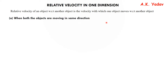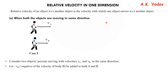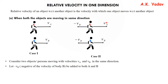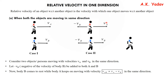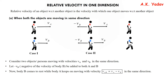Let's take the first case when both objects are moving in the same direction. We have two objects A and B moving with velocities VA and VB in the same direction. We add the negative of the velocity of B — that is, minus VB — to both A and B. Due to this, body B comes to rest because plus VB and minus VB sum to zero, while body A keeps moving with velocity VA minus VB.